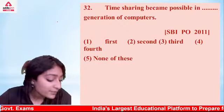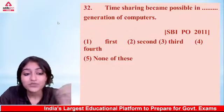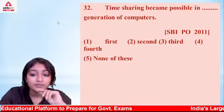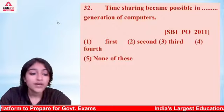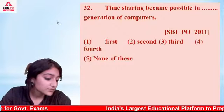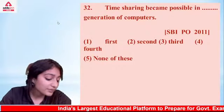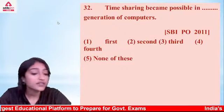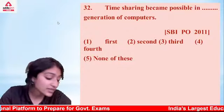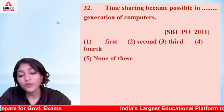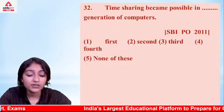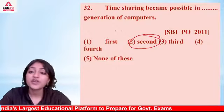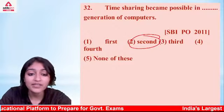Time sharing became possible in which generation of computers? Options: first, second, third, or fourth. The answer is option number 2 — second generation. Time sharing became possible in the second generation of computers.